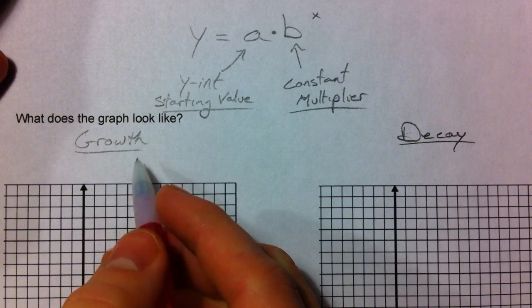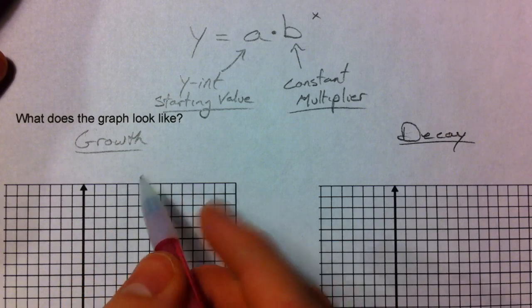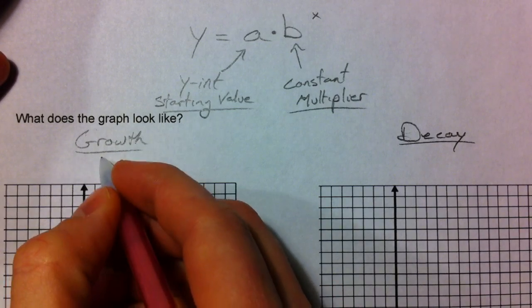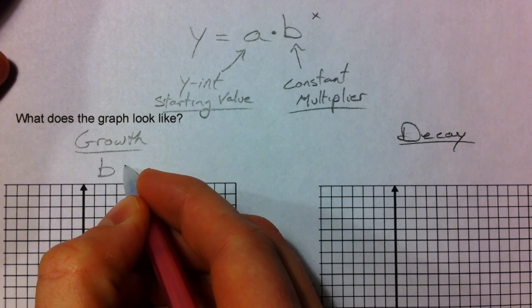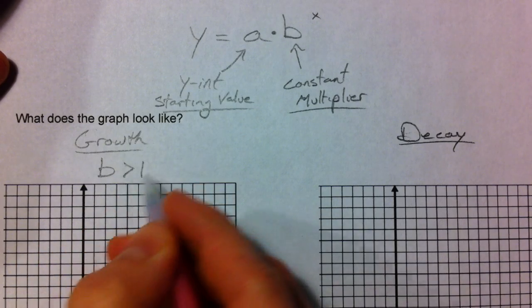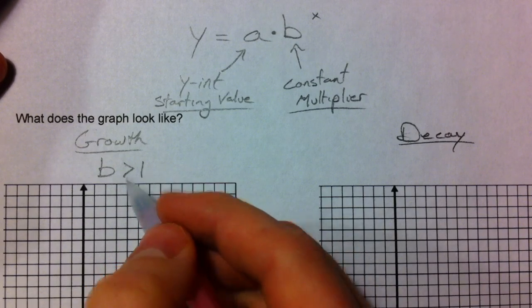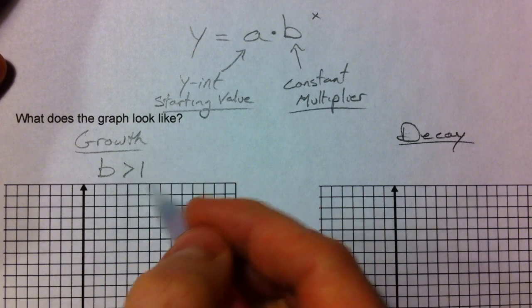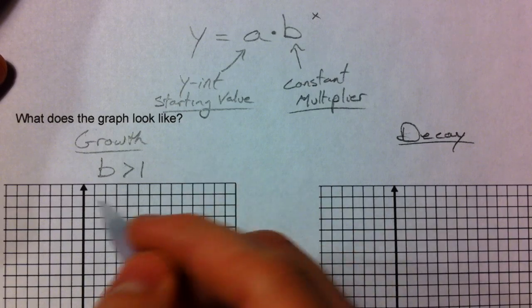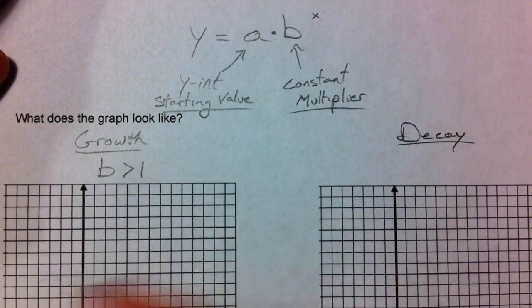So, what makes it grow and what makes it decay? Well, the cutoff is 1. If your b value is bigger than 1, if your number that you're multiplying by repeatedly is bigger than 1, obviously your number is going to get bigger. If you multiply by 2 times 2 times 2 times 2 or 3 times 3 times 3 times 3, it's going to grow.